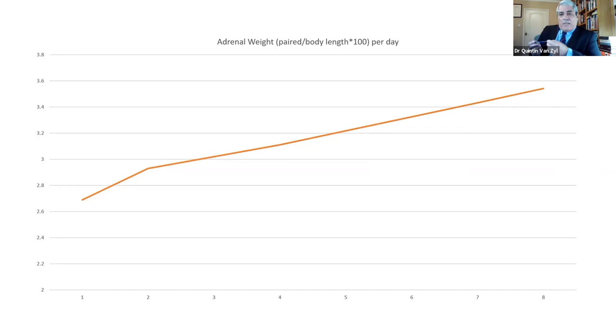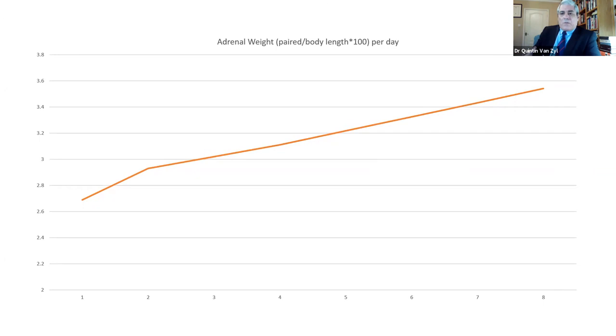The reason for that is that the parts of the body which contribute to the stress axis, the combat stress axis, increase in weight over the duration of consecutive battles. What Frank Bronson and Basil Eleftherio did was they weighed the adrenal glands of these mice at various intervals over eight days. What this indicates is that the adrenal glands underwent a physical change. So, they grew. These defeated mice became more effective at producing stress hormones.